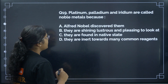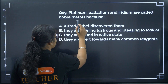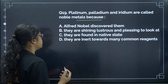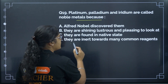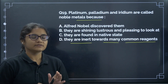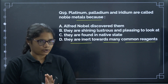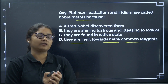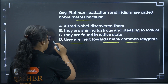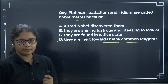Question 19: Platinum, palladium, and iridium are called noble metals because they are inert towards many common reagents. They are inert because they have a fully filled orbital, making them less reactive. The correct answer is option D.